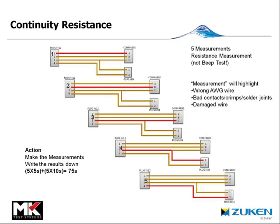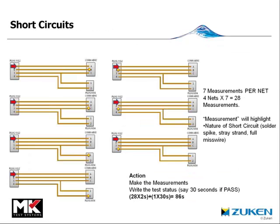Moving on from continuity test, we get to short circuit testing, which is often left out completely when manually testing due simply to the time involved. In short circuit testing, you need to introduce current on each contact and measure for that current appearing at any other point on the harness. Measurement is again emphasized because it is only measurement that will show the nature of any failure such as stray strands of wire, miswires, or solder spikes. Allowing just a couple of seconds per measurement and 30 seconds to log results, that is 86 seconds of manual testing — assuming equipment is readily available, no failures are found, and no re-tests are required.